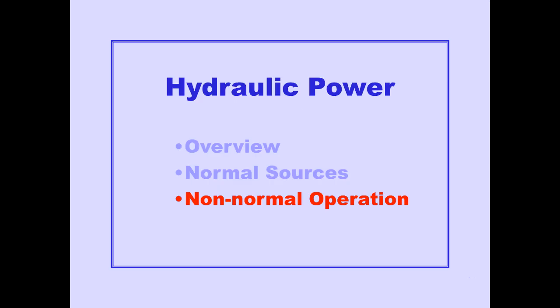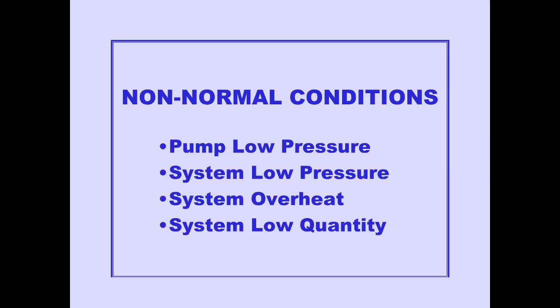We will now discuss non-normal operation. Our discussion will cover four types of non-normal conditions: pump low pressure, system low pressure, system overheat, and system low quantity. Let's begin with pump low pressure.